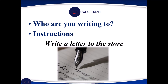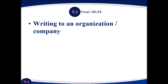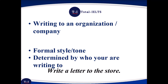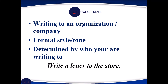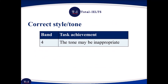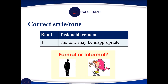First thing to do is decide who you're writing to, and this is always included in the instructions. In this case, you're writing a letter to the store. When writing to an organisation or company, your style must always be formal, and it's determined by who you're writing to. Writing in the correct style or tone is very important for General Training Writing Task 1. Failure to do so will result in a minimum score of four in task achievement.